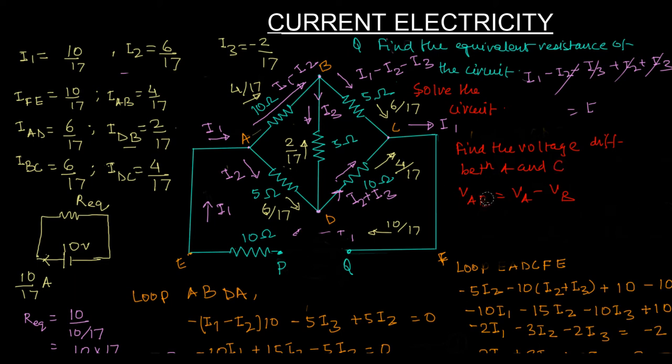So VAC is VA minus VC. How do I do that? You start from VA. Let me change the color. You start from VA and start writing the KVL. So, VA.